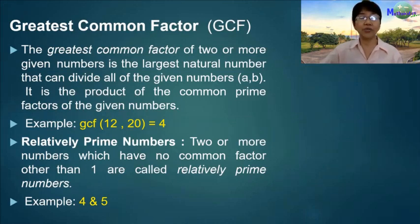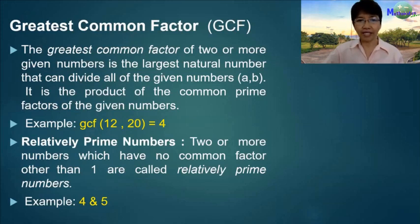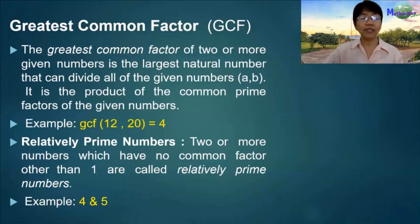Example: the GCF of 12 and 20 is 4, since 12 is divisible by 4 and 20 is divisible by 4. Relatively prime numbers: two or more numbers which have no common factors other than 1 are called relatively prime numbers. Example: 4 and 5 — 4 is not prime, but with regards to the pair 4 and 5, they are relatively prime because they have no common factor except 1.